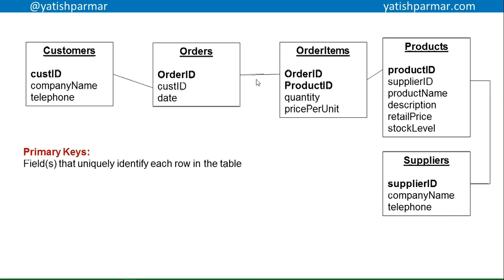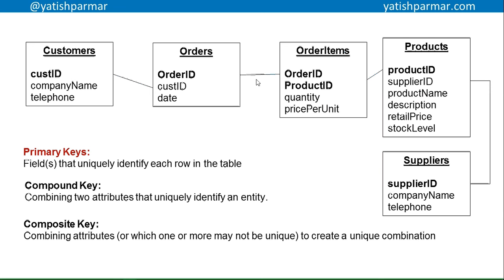The primary key uniquely identifies each row or tuple in the table — shown in bold in the diagram. Sometimes you have compound keys, where you combine two attributes that uniquely identify an entity. In the order items table, for example, every order is made up of order items, so a compound key of order ID and product ID together makes a unique row. Order five with product six and order five with product seventeen are two unique rows — that's a compound key.